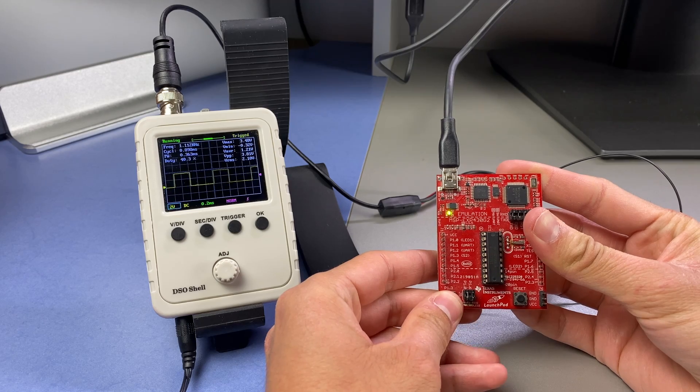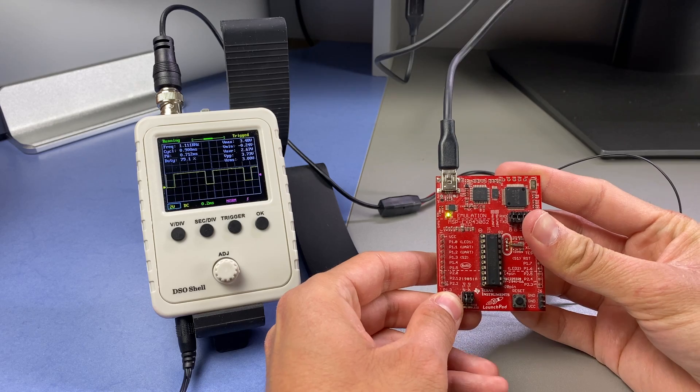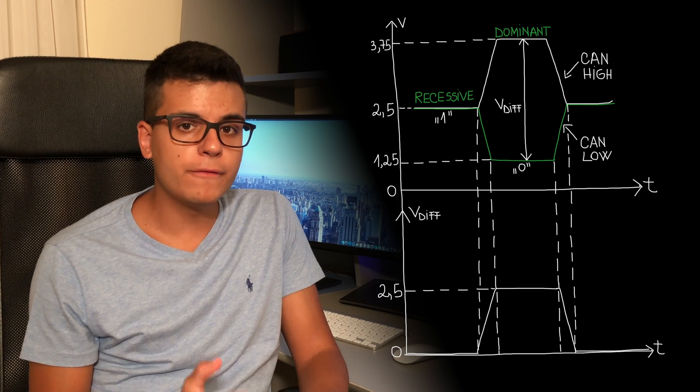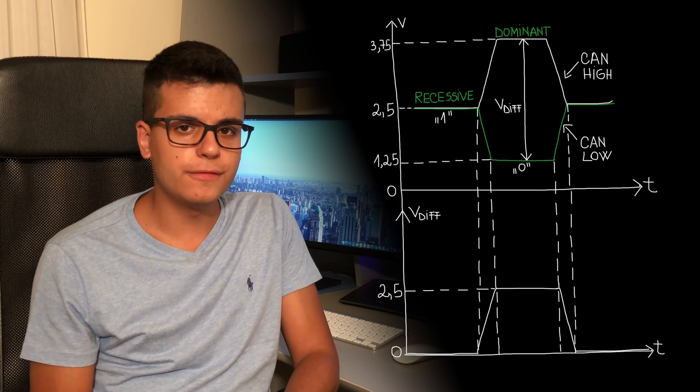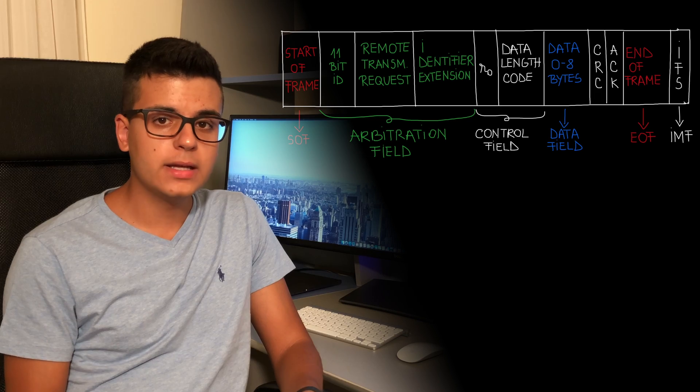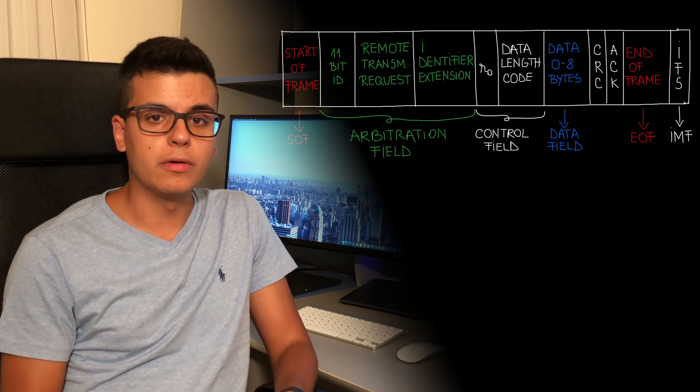Hi everyone, this is Fabi here and today we'll be talking about the compare mode of capture and compare modules which are capable of outputting signals with modifiable duty cycle, hence the name pulse width modulation. If you're new to the channel, this video is part of an educational series I'm doing called Embedded Systems Explained, and the aim of the series is to explain embedded systems in a simple to understand manner and with examples so that you know where these concepts are used in the real world.